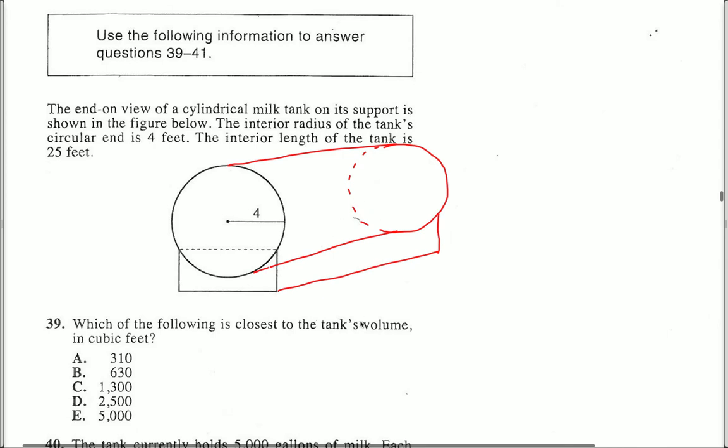Now this cylinder, we're looking for the volume of it, and the volume of a cylinder is given by the equation V = πr²h. In this case, h is actually the length of the tank, because r is 4.